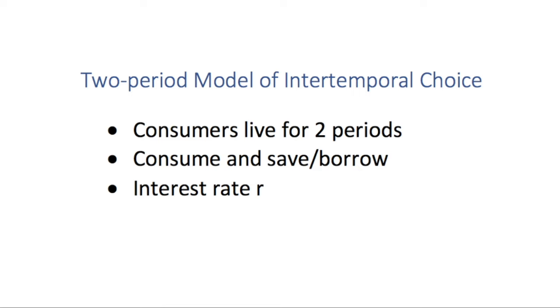So this is a two-period model of intertemporal choice where we have consumers who live for two periods. We have some kind of time aspect, an intertemporal aspect. Our consumers can consume some of their income and then they also have the choice of either saving or borrowing.